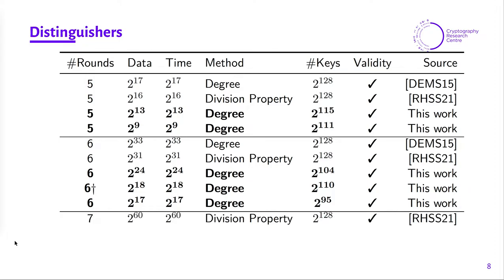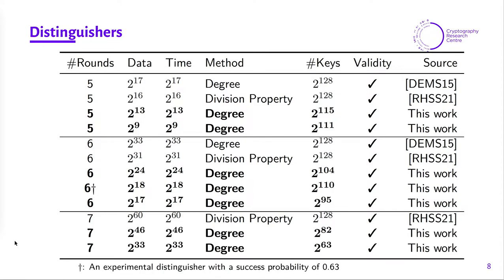For seven rounds, the best known distinguisher requires 2^60 data and is not practical. We improve the complexity of the previous distinguisher from 2^60 down to 2^46 and then to 2^33, which is practical and can be verified easily. The trade-off is that the number of keys for which such distinguishers work is smaller. For the distinguisher with 2^46 data the number of weak keys is 2^82, while for the one with 2^33 data it is 2^63.